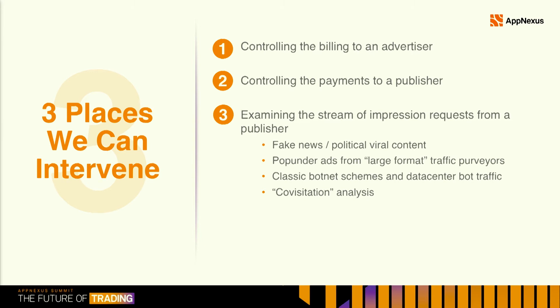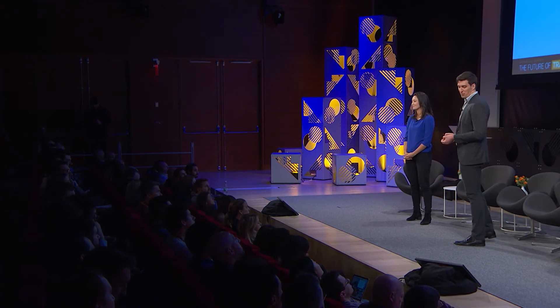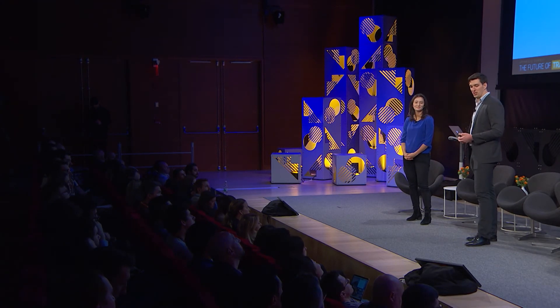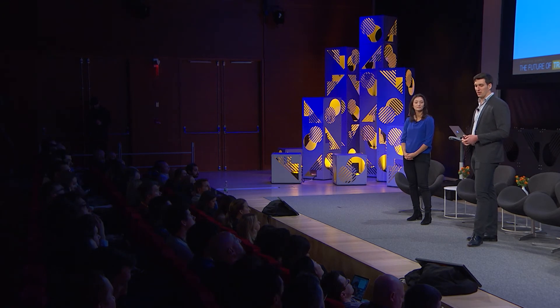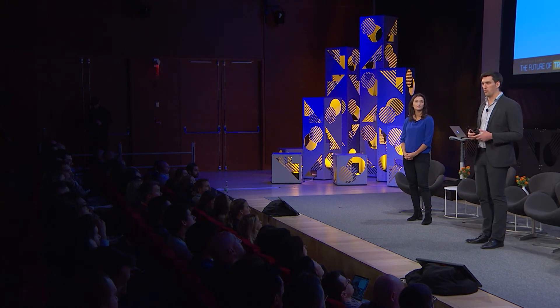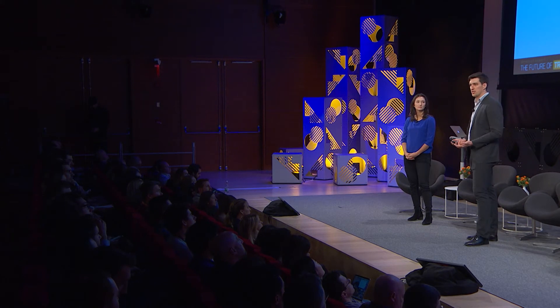The third thing is to look at the stream of data that comes to us in the form of impression requests. This is where the data science part is really interesting. That stream is what allows us to find a lot of the fake news and political viral content. We also find things like pop-under advertisements from large-format ad networks, as well as classic botnets. One thing in particular we like to do is called co-visitation, and it's tremendously impactful.